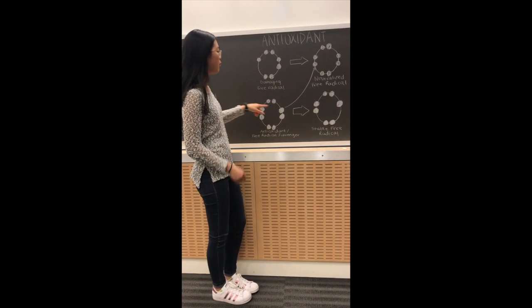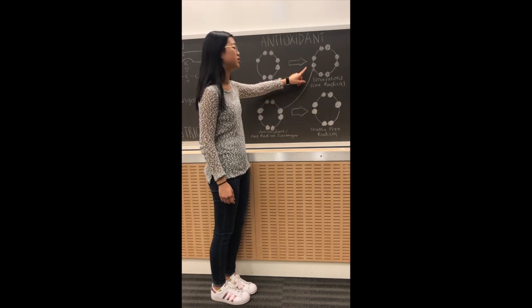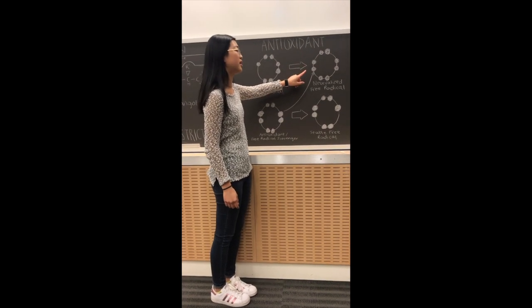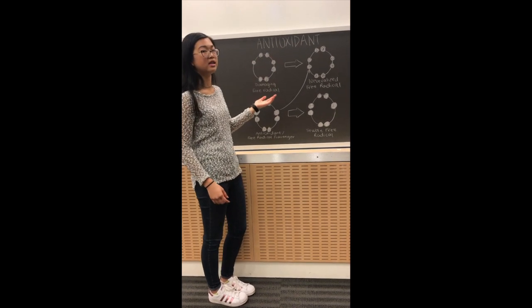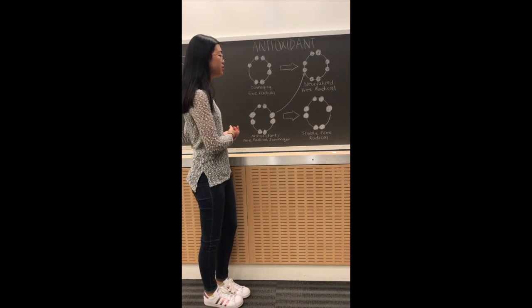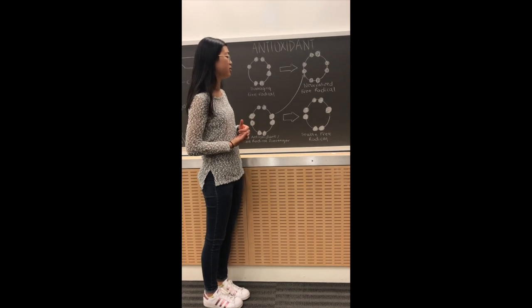which means like atoms or molecules losing these electrons. So it will donate one of the electrons to neutralize these free radicals. So then it'll have like the eight or at least an even number, and it's able to do this without becoming a free radical itself.